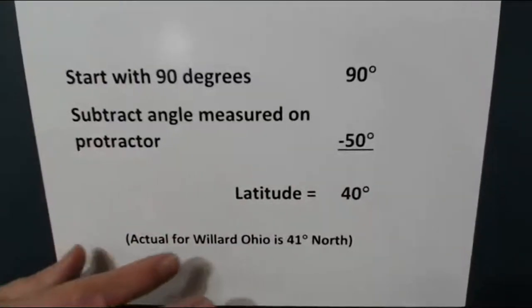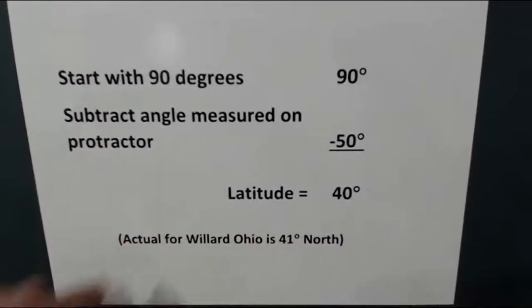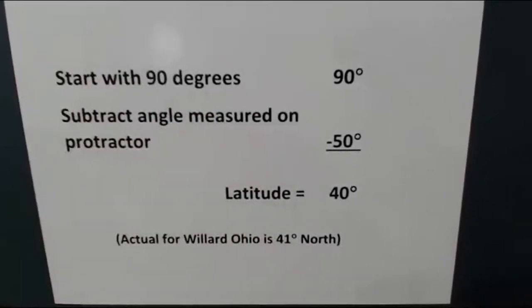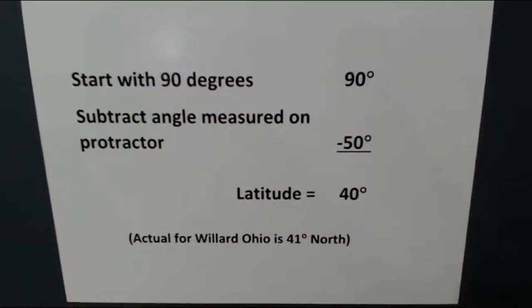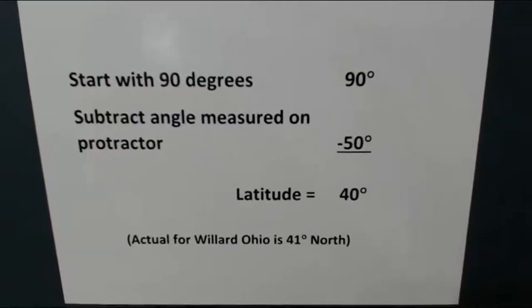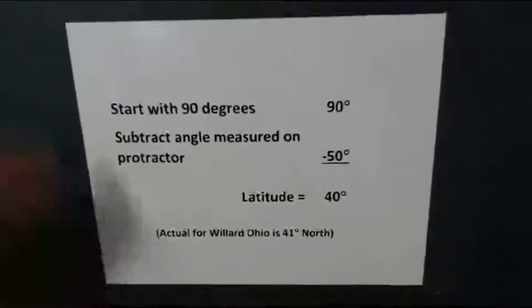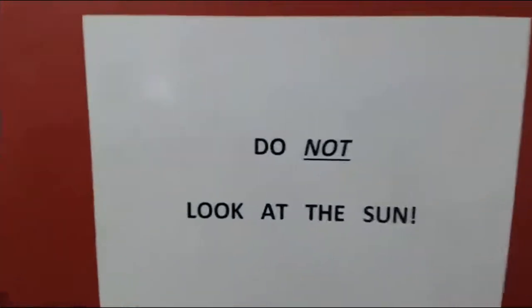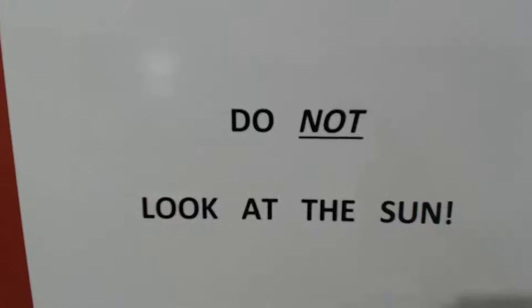By the way, Willard, Ohio is at 41 degrees north latitude, so if you try this and come up with something in the 40s range, that's a good measurement. One final and very important warning: do not point this at the sun. Use it at night. You can measure different stars if you like, but do not use it during the day.